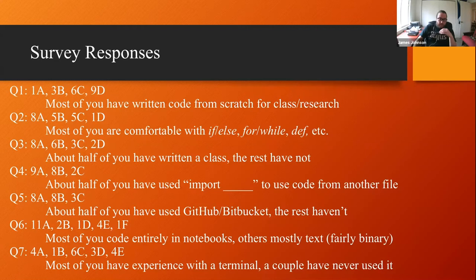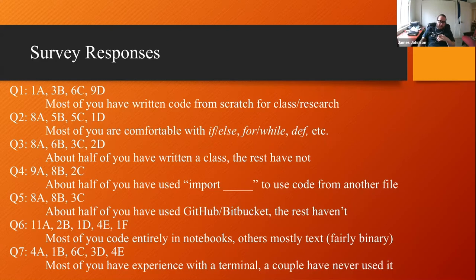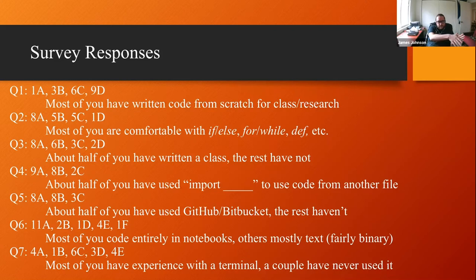Question five was about GitHub or Bitbucket or similar equivalents, which are online repositories where you can store and manage code and do version control. That's a means of managing code where not just the present version is relevant. In large packages like NumPy, SciPy, or Matplotlib, they're interested in multiple versions in development, and things like GitHub and Bitbucket let you switch back and forth between them very easily. The sixth question was about notebooks versus text files, or some mix thereof — primarily about the medium in which you write code.